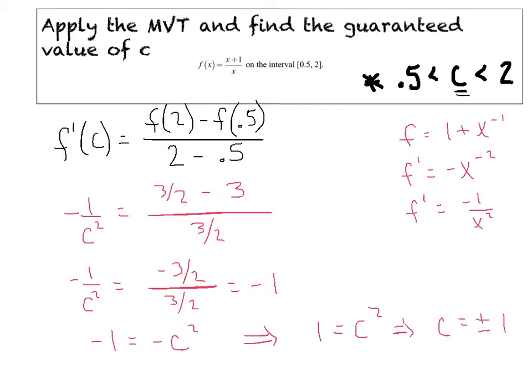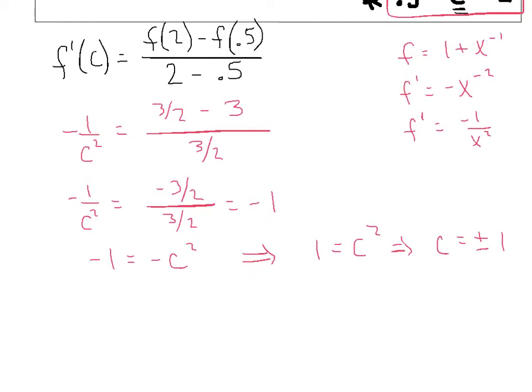Here's the kicker. Where does c have to live? c has to live within that interval right there. So what I'm going to do is reject the -1, toss it in the garbage, and say that c equals positive 1, and that's the value that's guaranteed by the Mean Value Theorem.